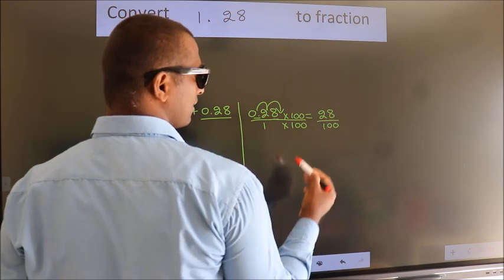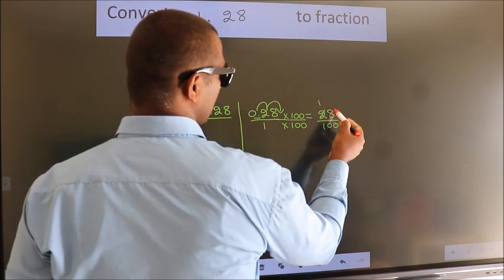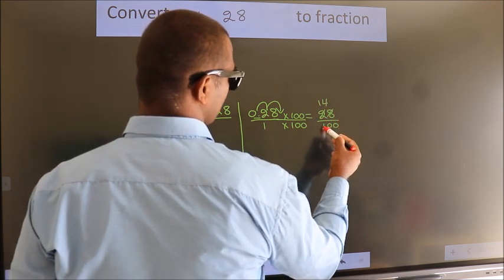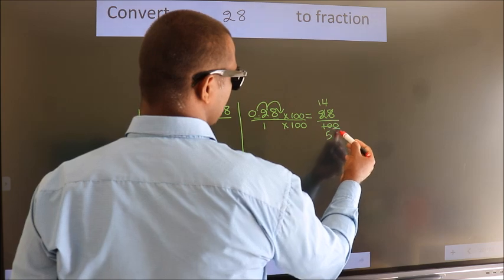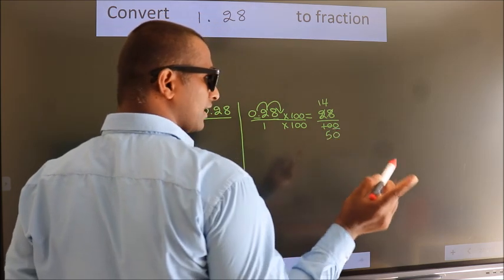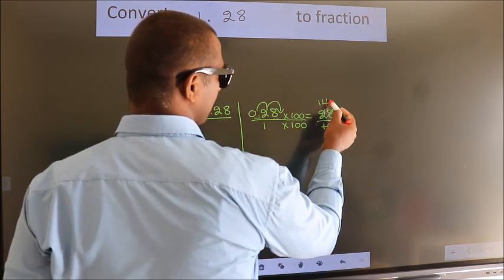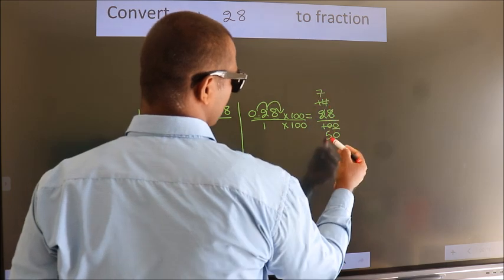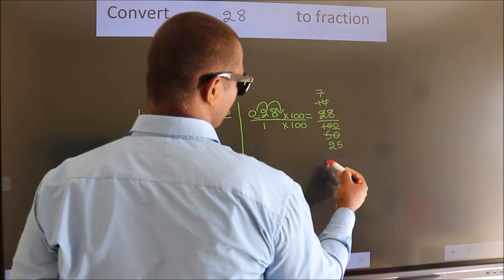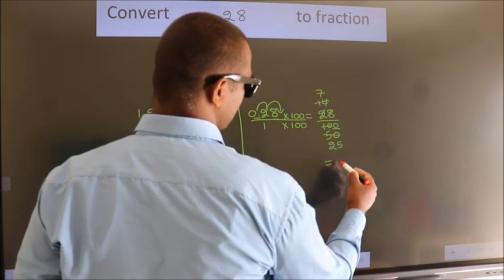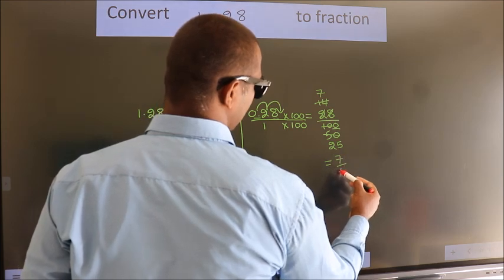Now I cancel with 2. 2 into 28 is 14, 2 into 100 is 50. I cancel with 2 again. 2 into 14 is 7, 2 into 50 is 25. So our fraction is 7 by 25.